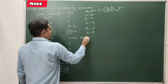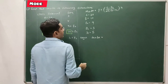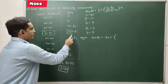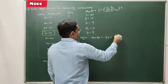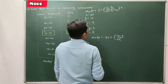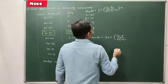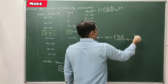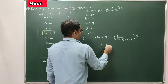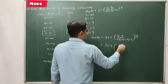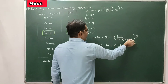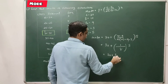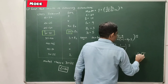Putting all values into the formula: mode = 30 + (10 minus 9) upon (2 into 10 minus 9 minus 3) into 5. Simplifying: 30 + 1 upon (20 minus 9 minus 3) into 5, which is 30 + 1 upon 8 into 5, giving 30 + 5 by 8.